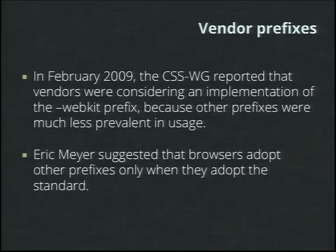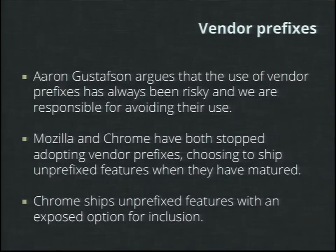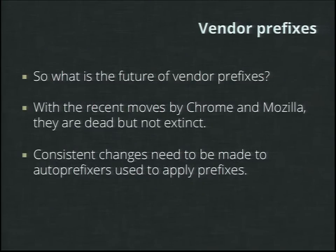In 2009, the CSS working group discussed vendors considering implementation of the WebKit prefix because other prefixes like -moz were not getting enough usage. This led to a discussion that we should only adopt other prefixes when the standard has been adopted — a very important step. More recently, Mozilla and Chrome have both stopped adopting vendor prefixes, choosing to ship unprefixed features as soon as they mature. Chrome ships unprefixed features with an exposed option. So vendor prefixes are essentially dead, but not quite extinct since you still see them in a lot of CSS, and auto-prefixers are still used in CSS preprocessing.